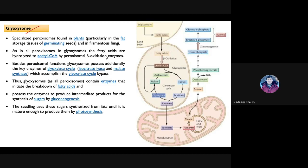During germination, the energy source comes from the oils already present in the seeds. These seed oils are the source of energy for germination, and the lipids present in the seeds are metabolized by the glyoxylic acid cycle.